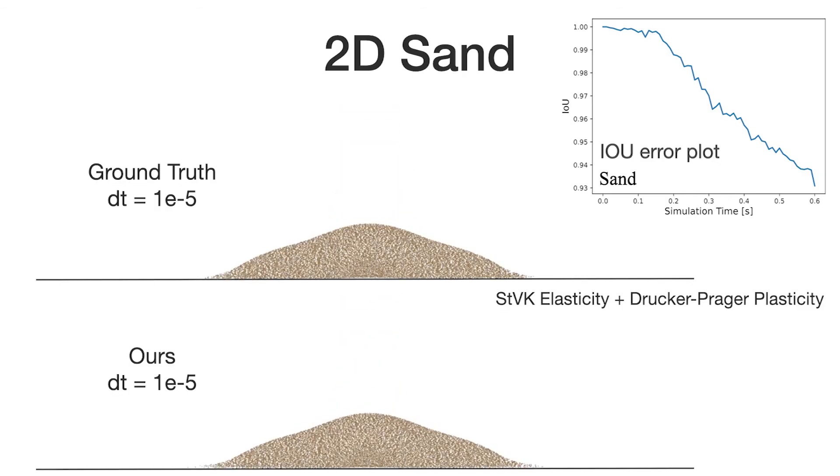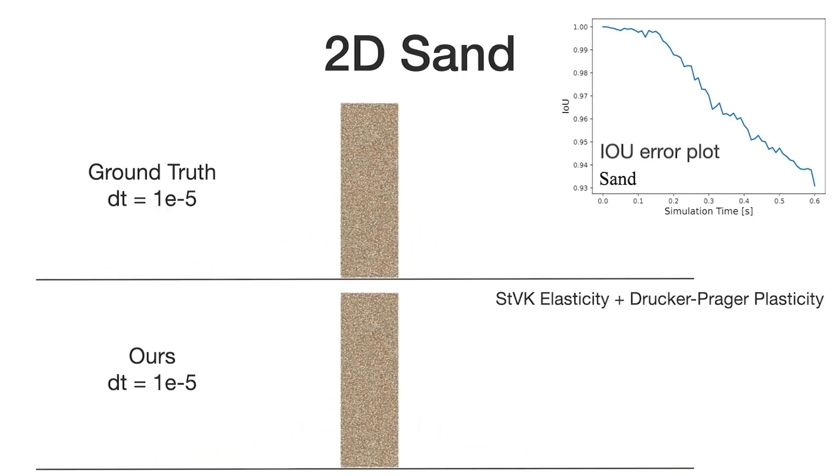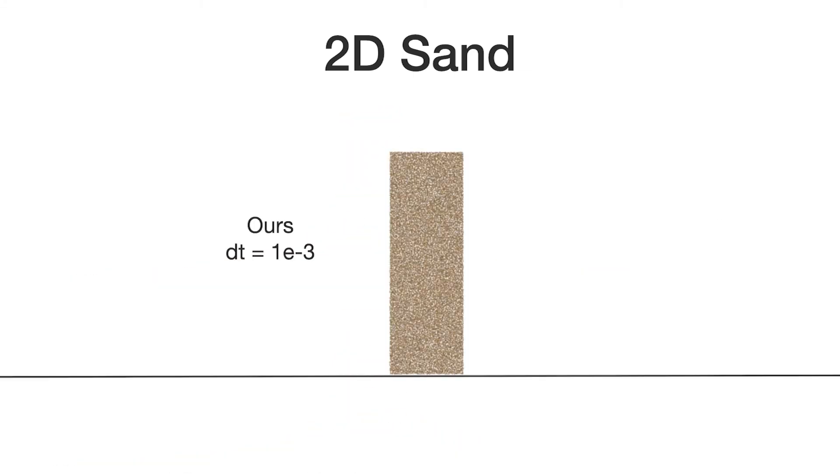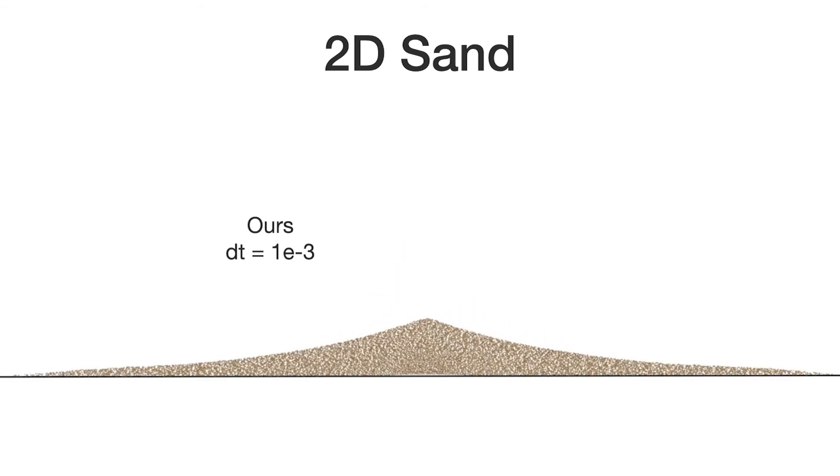We simulate a column of sand falling onto the ground under gravity with MPM. Our method generates visually identical results compared to the ground truth, both with the same time step size and a 100 times larger time step size.